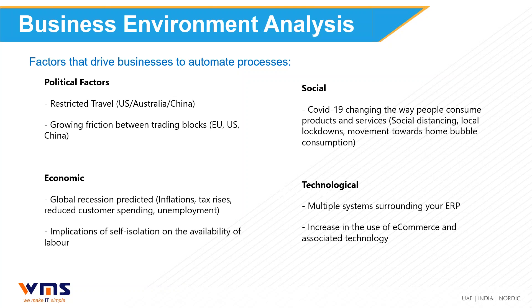The implications of self-isolation are significant. If you have 100 members of staff and two people get coronavirus, all of a sudden everyone may have to isolate. From a social point of view, everyone has changed the way we consume products and services — restaurants, bars, shopping — a lot of it is online now. We stay home more and work from home more. From a technology perspective, there's a big increase in people going online and using that technology.